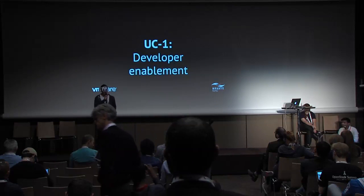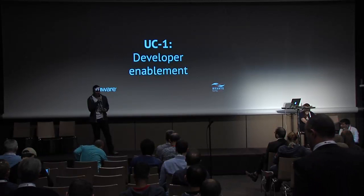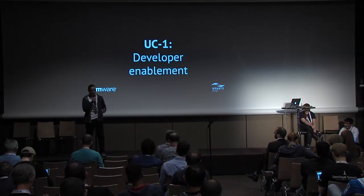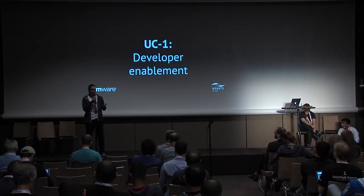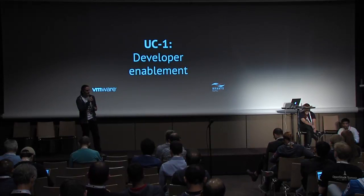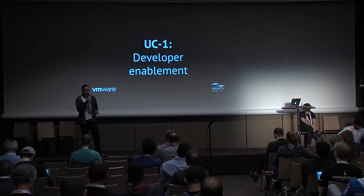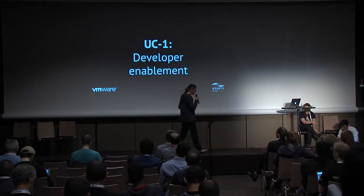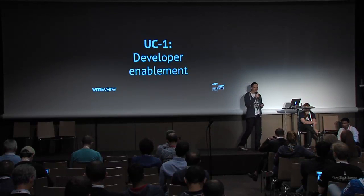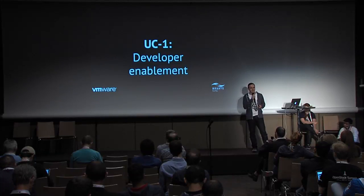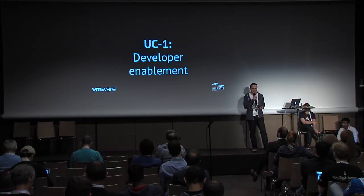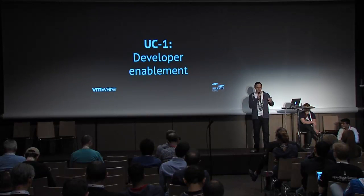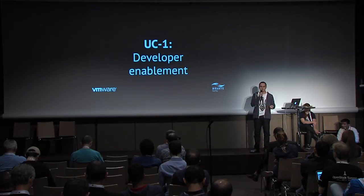Use case number one — where the whole OpenStack thing started — is developer enablement. The company is happily running infrastructure using VMware: vCenter with vSphere, some storage, workloads already running without cloud enablement on top. The organization becomes interested in enabling developers with agile, DevOps-style self-service to provision stuff on this infrastructure without needing to interact with admins all the time. That's when dropping OpenStack on top of existing VMware infrastructure becomes a good first step.